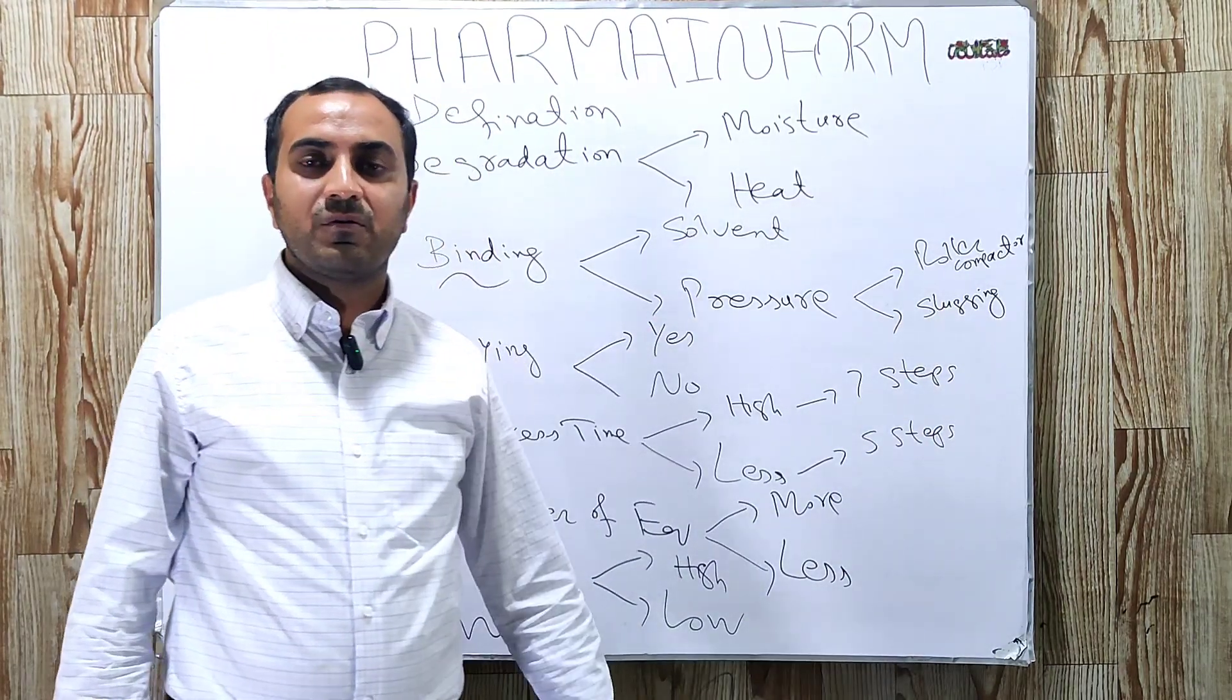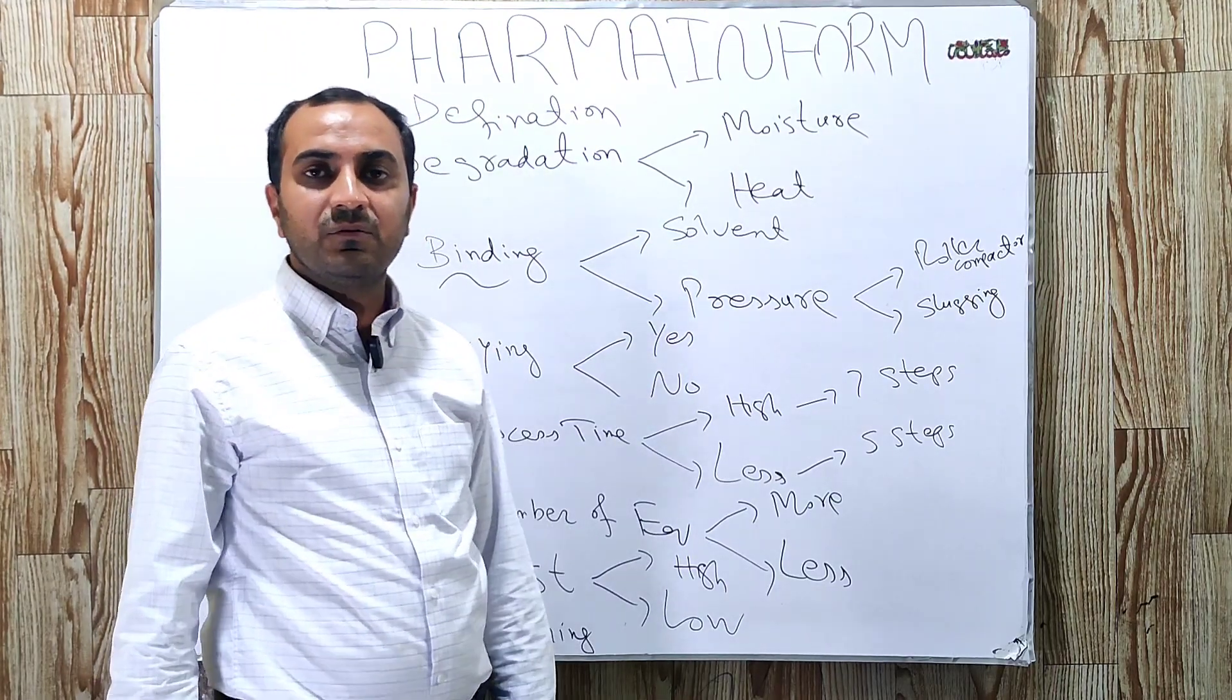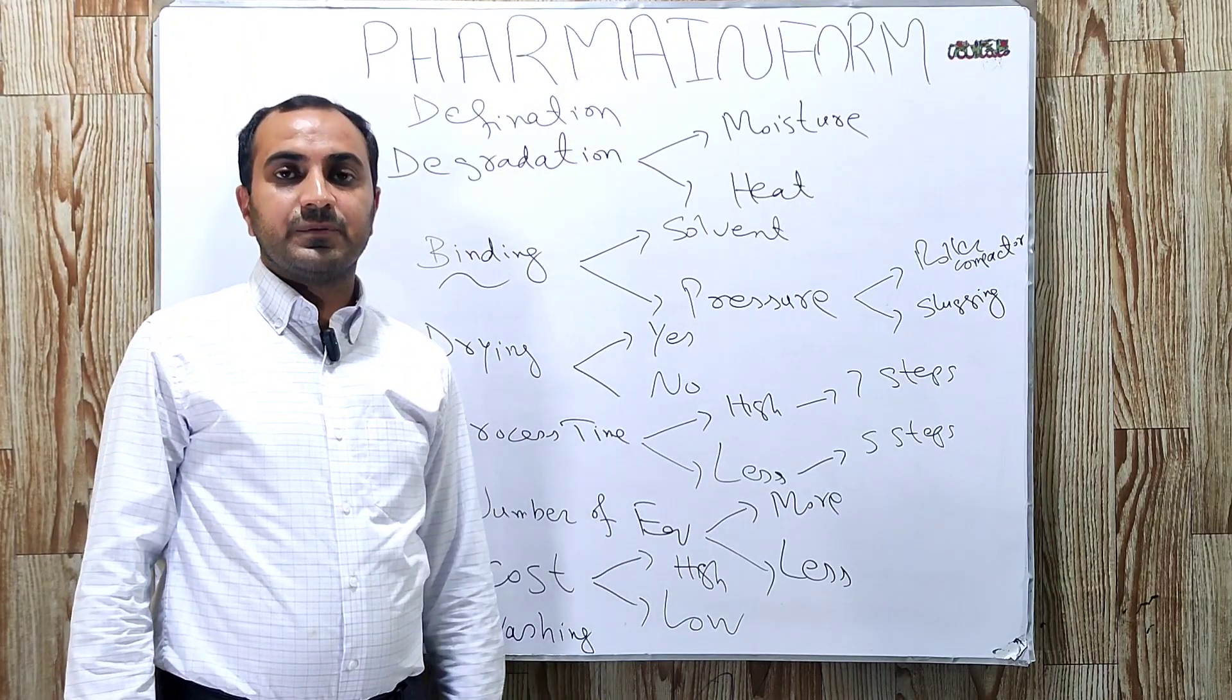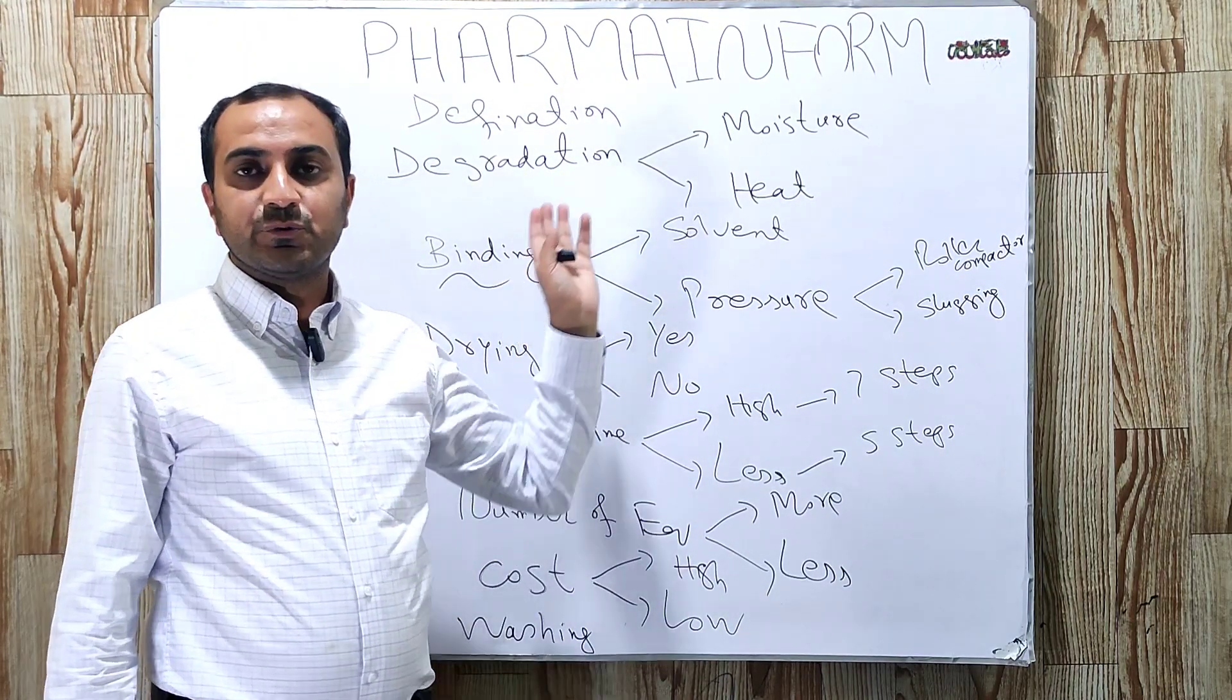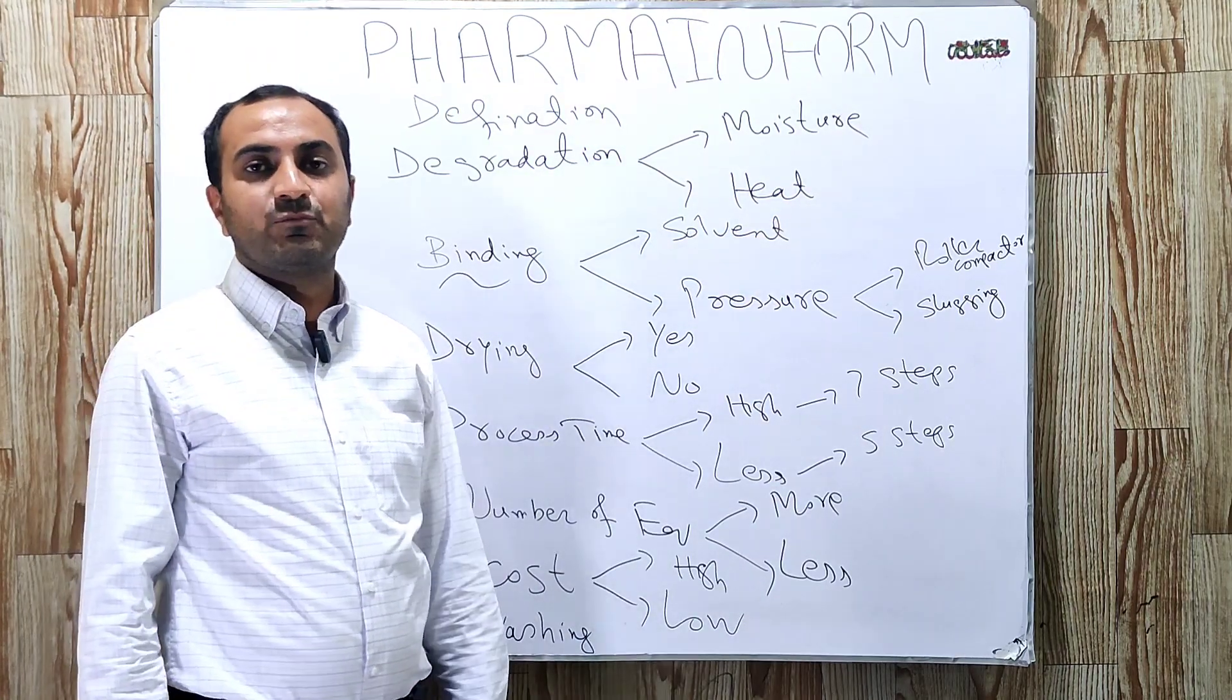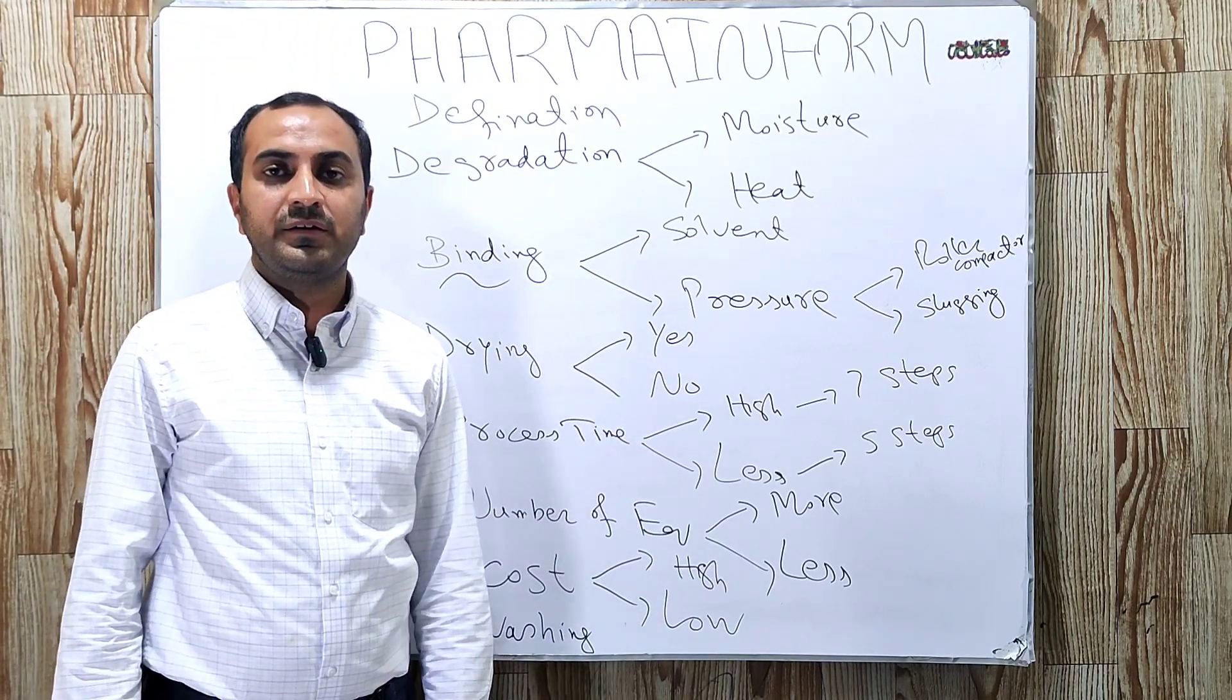The next one is drying. The drying process is used in wet granulation to remove excessive moisture, but in dry granulation we do not use heat because our products are sensitive to heat.